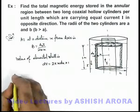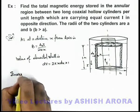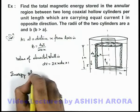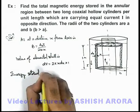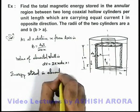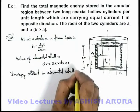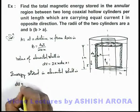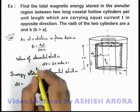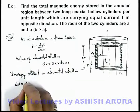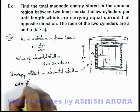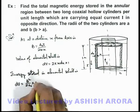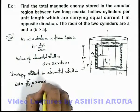Now we can directly write energy stored, field energy stored in elemental shell. This energy dU we can write as the product of field energy density and the volume, so this will be B²/(2μ₀) multiplied by the volume which is 2πx dx.